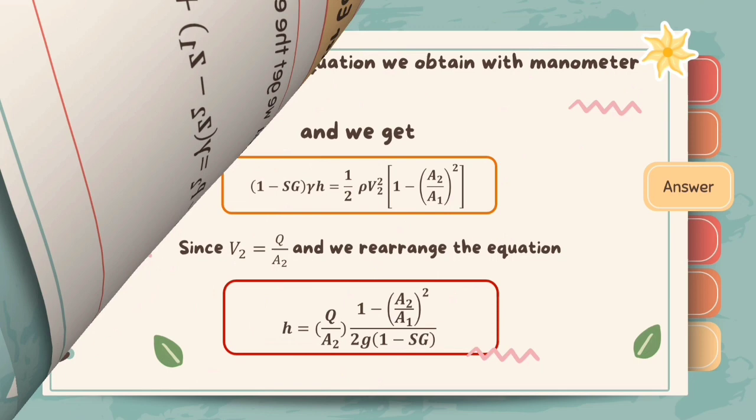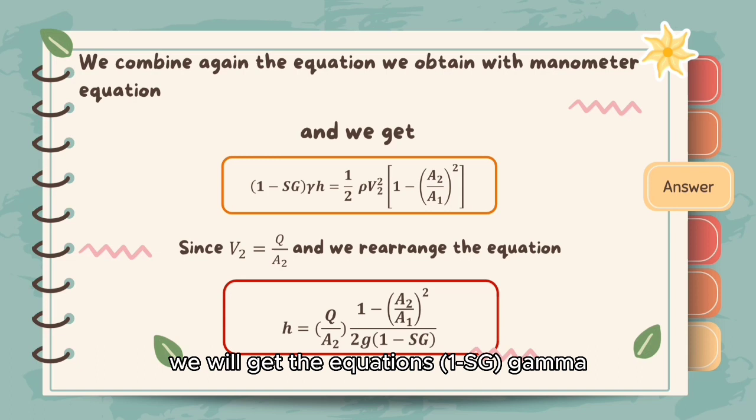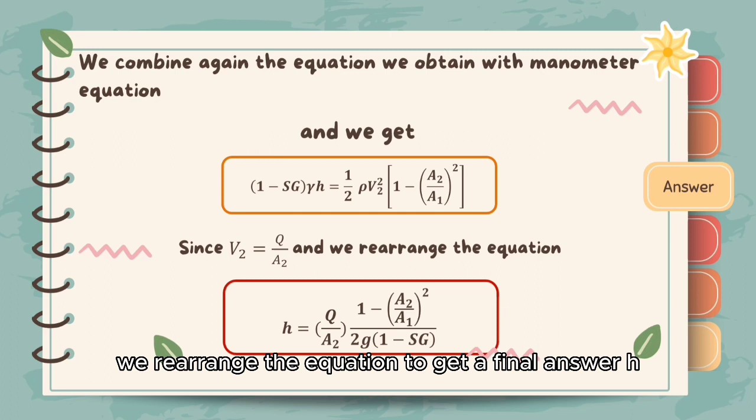When we use equation A equal to equation B, we will get the equation 1 minus SG γ h. Since average velocity is equal to volume flow rate over cross-sectional area, we will rearrange this equation to get the final answer h.